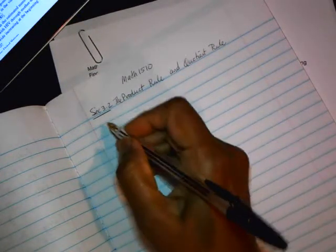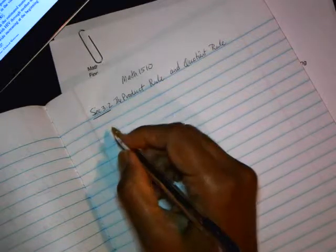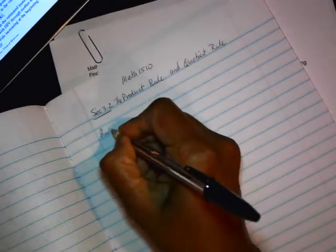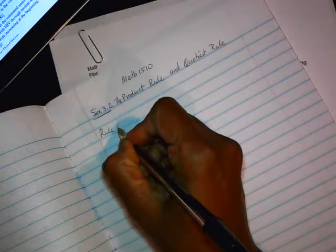Section 3.2 is the product and quotient rules. So in the previous section, we had seen four basic rules. To our list, we're going to add two more rules today in this section.